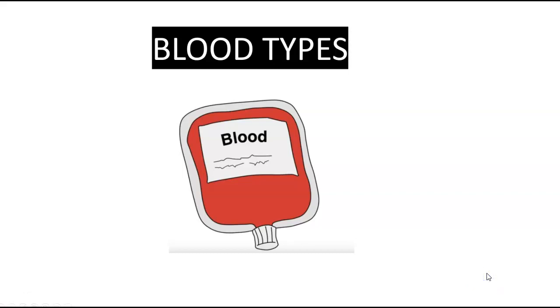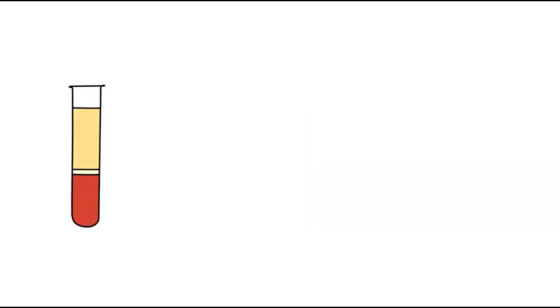Today's lecture is about the different blood types. If you took a sample of blood from an individual and ran it through a centrifuge machine, you would be able to separate the blood into different compartments based on the density of the molecules. Here we have a diagram where the blood has gone through a centrifuge machine, and the first compartment at the top is made up of blood plasma.